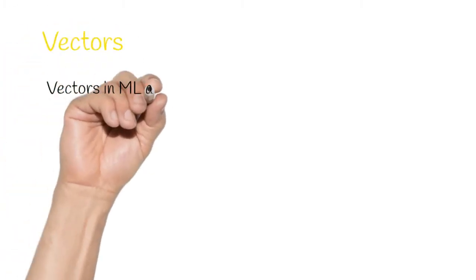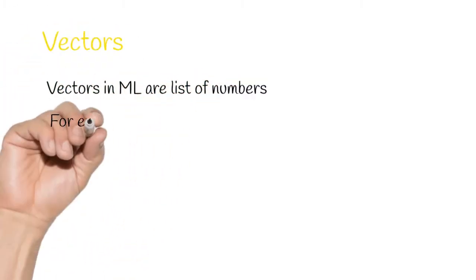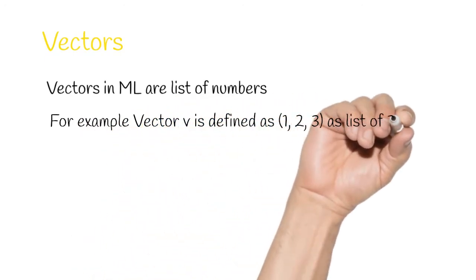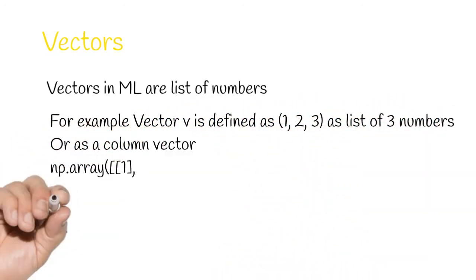Vectors in machine learning are list of numbers represented as column vectors. They can be thought of as one dimensional arrays.